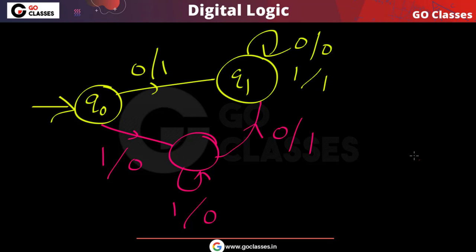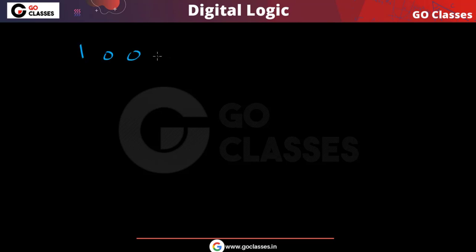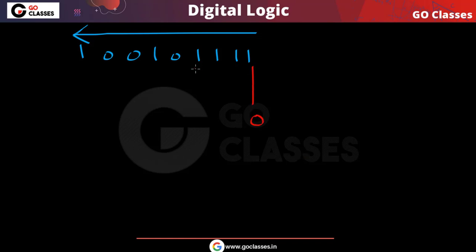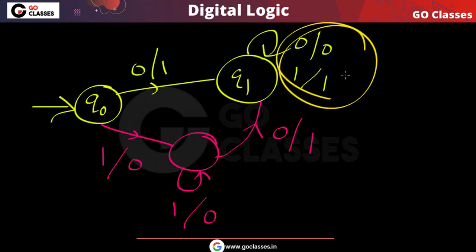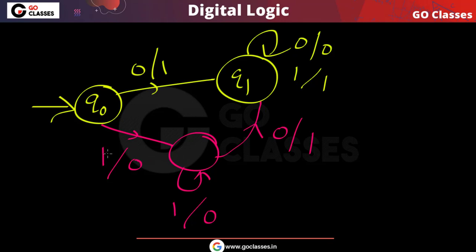Reading from right to left: this 1 should be changed to 0, any number of further 1s should also be changed to 0, the first 0 should be changed to 1, and the remaining bits are left as they are. This idea is implemented in the Mealy machine — if the first symbol is 0, convert to 1, then everything else is as it is; 0 stays 0 and 1 stays 1.